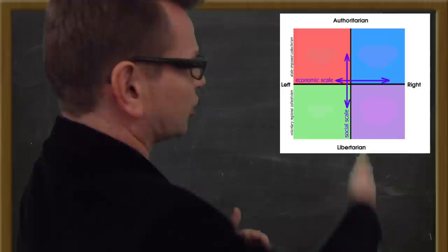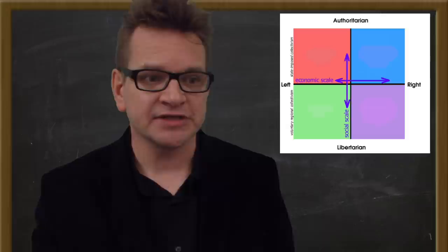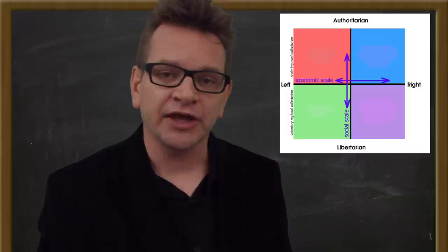If you're talking about the vertical line going up and down, you're talking about social order. Somebody who is an anarchist would be all the way at the bottom, believing there should be no government regulation on human behavior at all, as opposed to all the way at the top, which is totalitarianism.